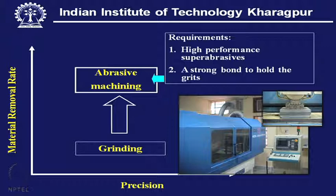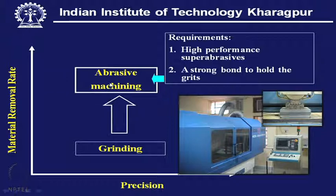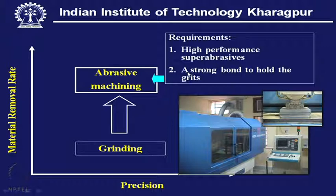However, grinding can be elevated and attain the status of abrasive machining if we increase the material removal rate to be comparable with that provided by a cutting tool. To achieve this, there are at least two minimum requirements: one is that the abrasive material must be a high-performance super abrasive, and there must be a strong bond to hold the grits.